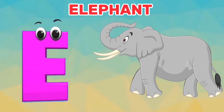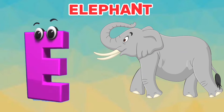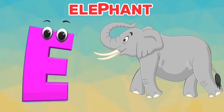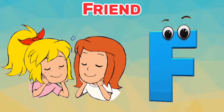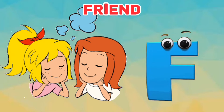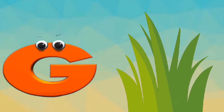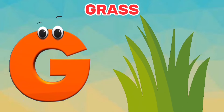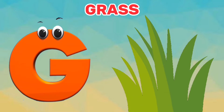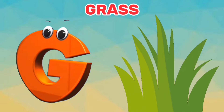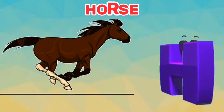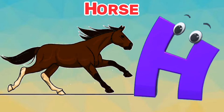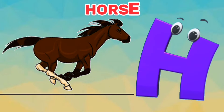E is for elephant. E, e, elephant. F is for friend. F, f, friend. G is for grass. G, g, grass. H is for horse. H, h, horse.